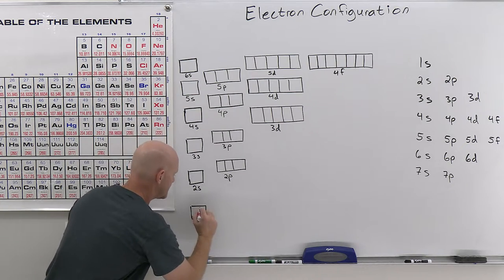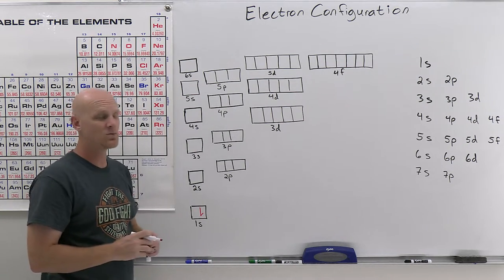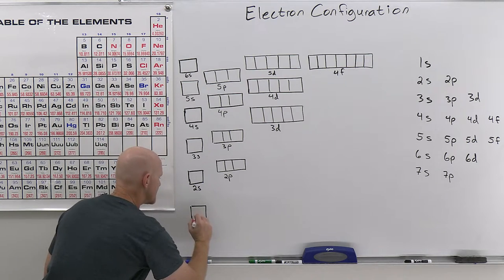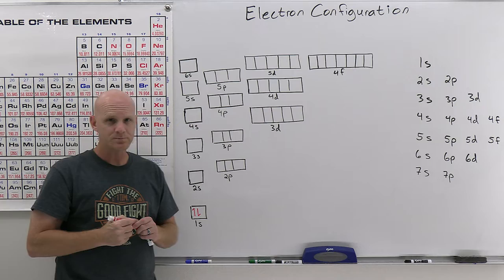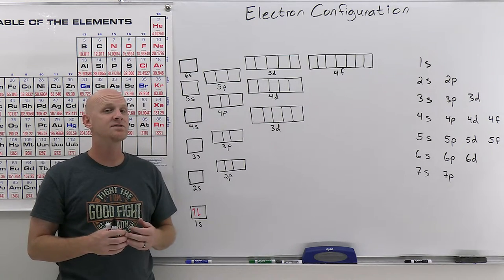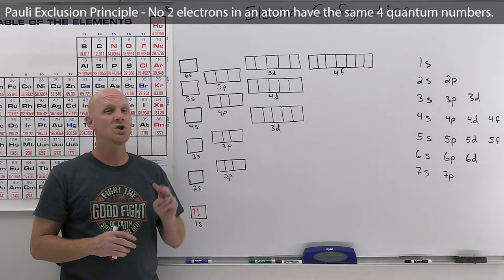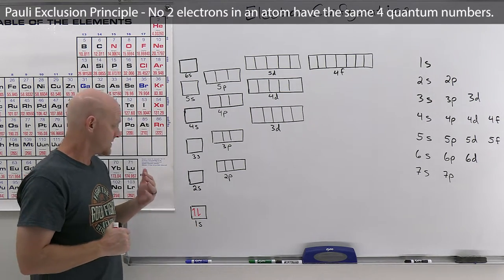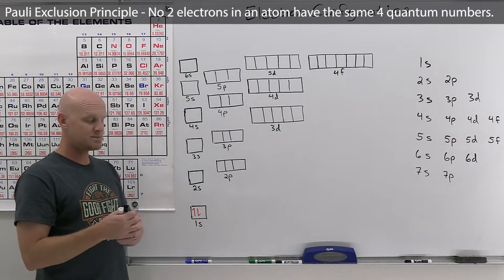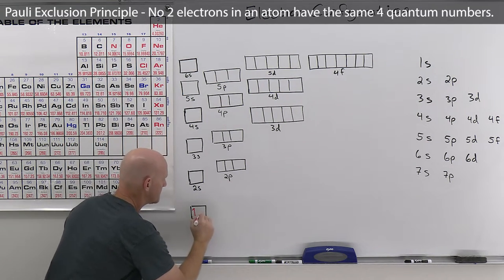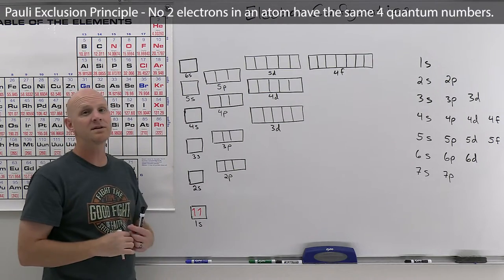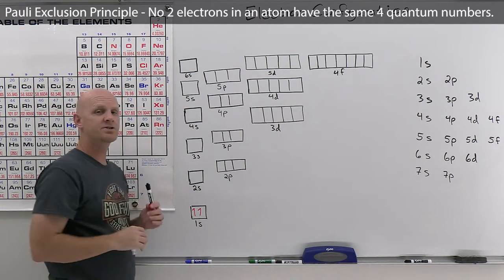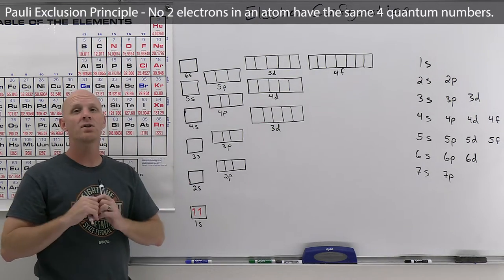Once you've fixed one spin direction, the other electron must have the opposite spin. That comes down to the Pauli exclusion principle, which says no two electrons in an atom can have the same four quantum numbers. This means you can't have two electrons in the same orbital with the same spin. Putting two electrons in the same orbital both spin up or both spin down would be a violation of the Pauli exclusion principle — a type of question you might get on the test.